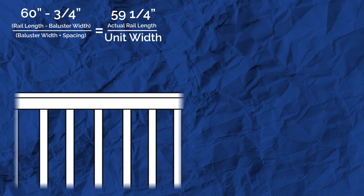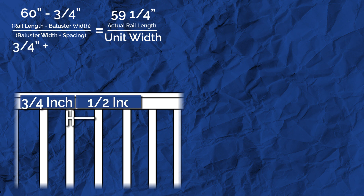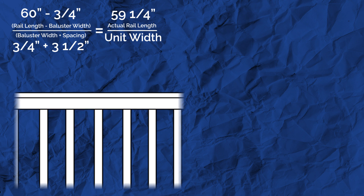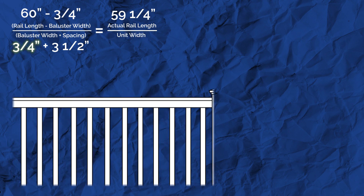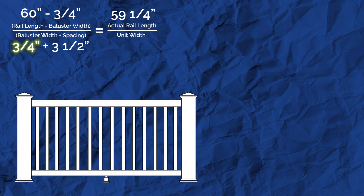Find your unit width, which is the width of one baluster plus the space between two balusters. In our example, our baluster width is three-quarter inch and our space between balusters is three and a half inches. Together, our unit width is four and a quarter inches.